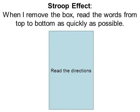Here's something kind of fun — this is called the Stroop effect. It's a fun, silly way to mess with your brain. When I remove the blue box, from top to bottom, read the words as quickly as possible. There are about six or seven words. Here we go, on the count of three — three, two, one.